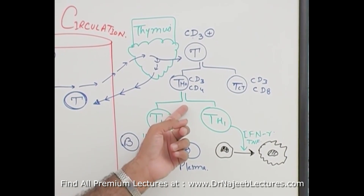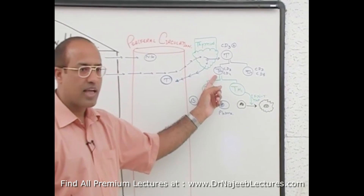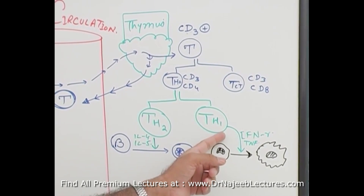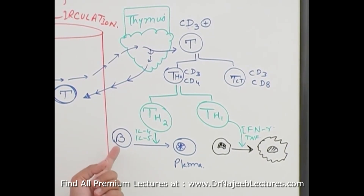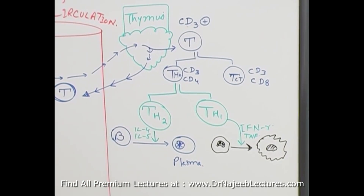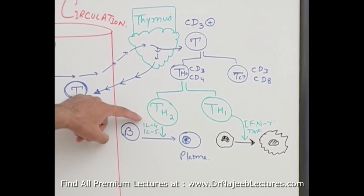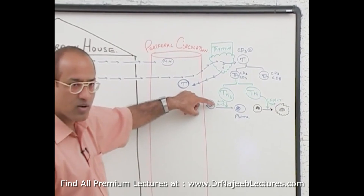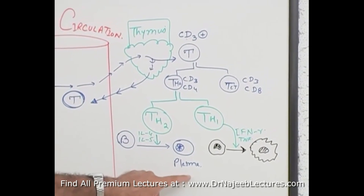T helper cells help immune components function better. They can convert into T helper 2 or T helper 1. T helper 2 cells produce interleukin-4, which acts as a B cell growth factor, and interleukin-5, which acts as a B cell differentiation factor. Together, interleukin-4 and 5 help B cells convert into plasma cells.